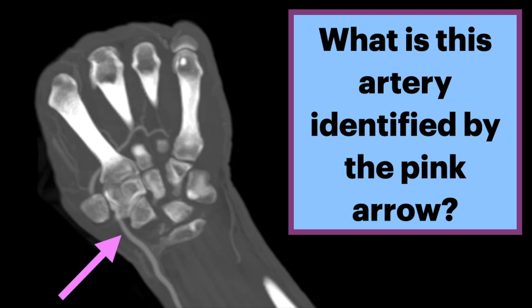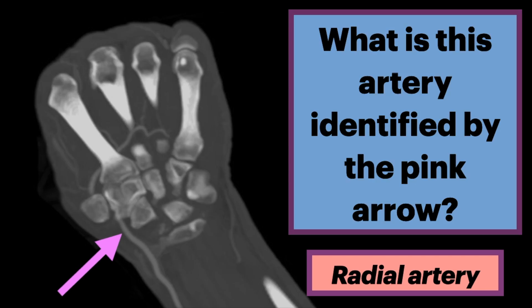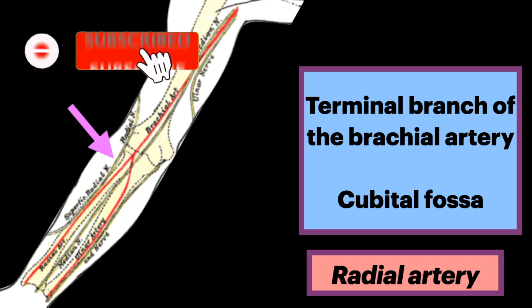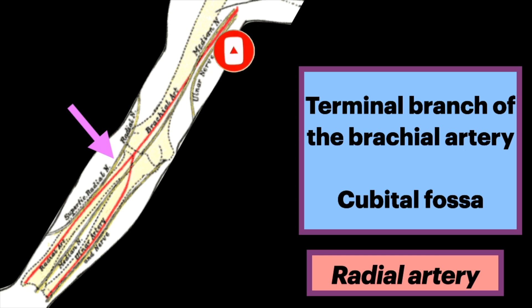What is the artery identified by the pink arrow? We see a robust vessel along the radial aspect of the wrist. Not surprisingly, this is the radial artery. It is a terminal branch of the brachial artery and arises at the cubital fossa of the forearm. It is one of the two main arteries of the forearm, along with the ulnar artery.